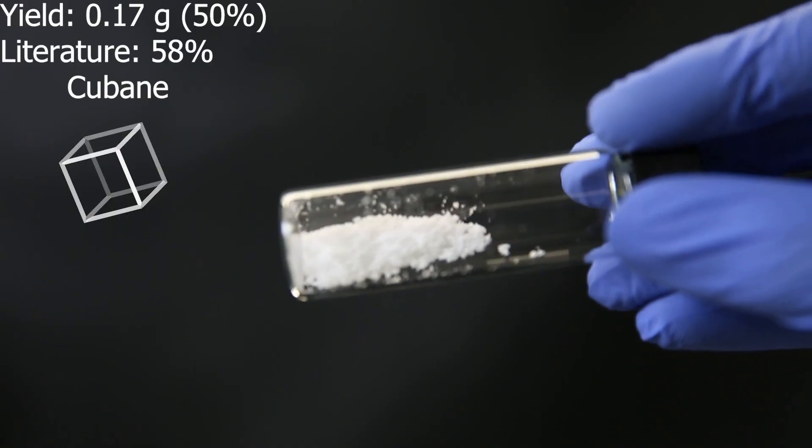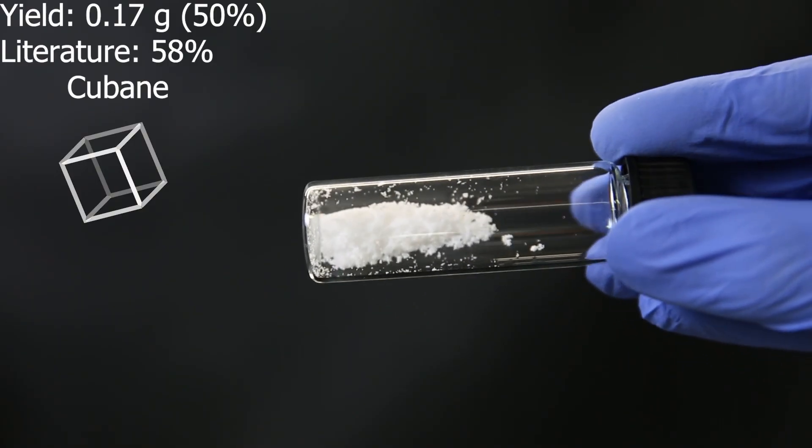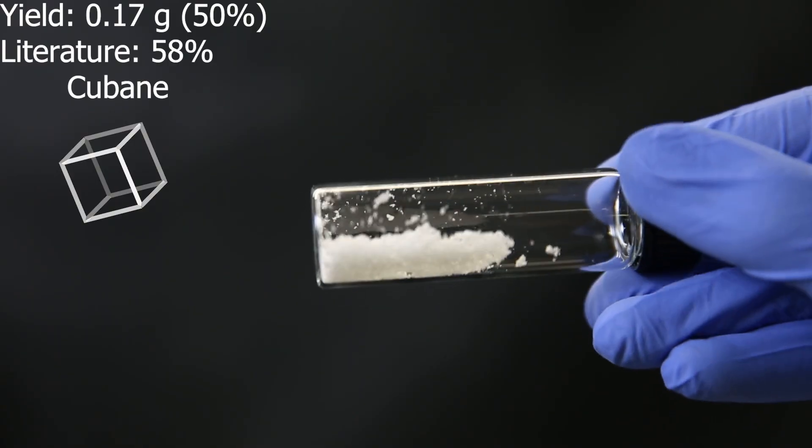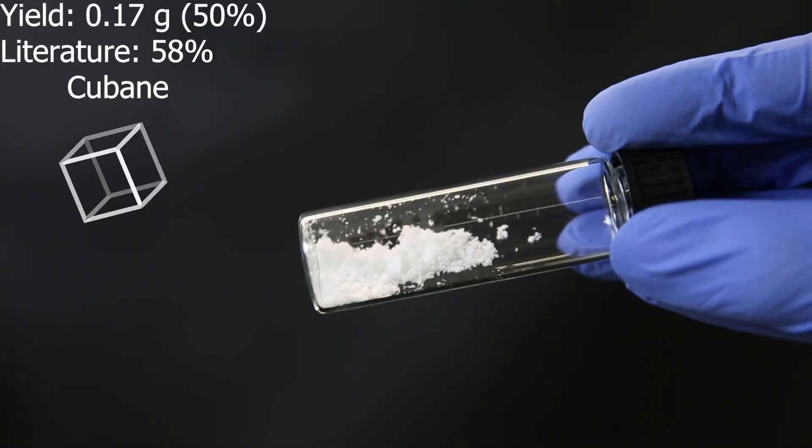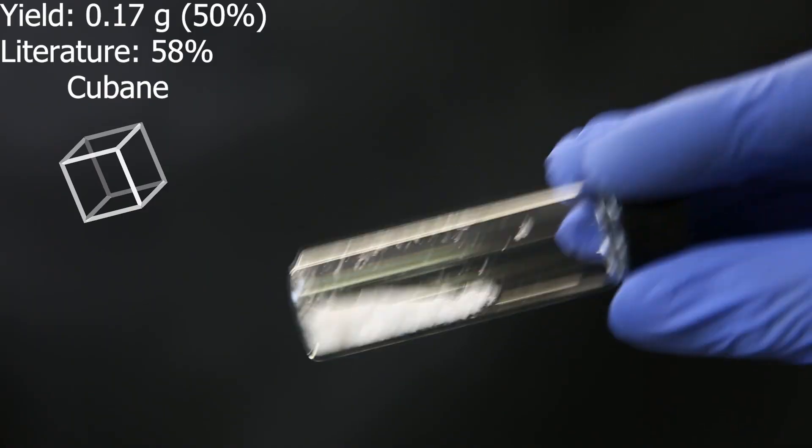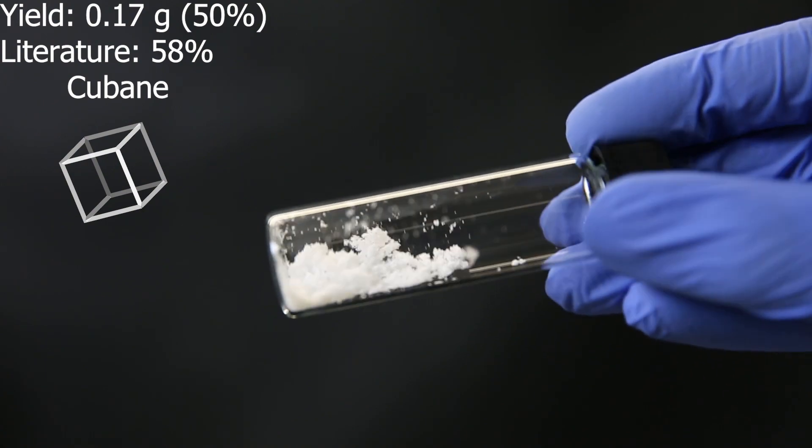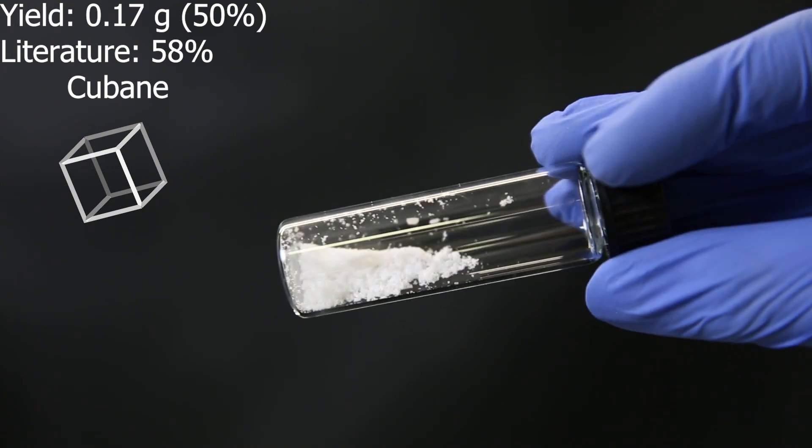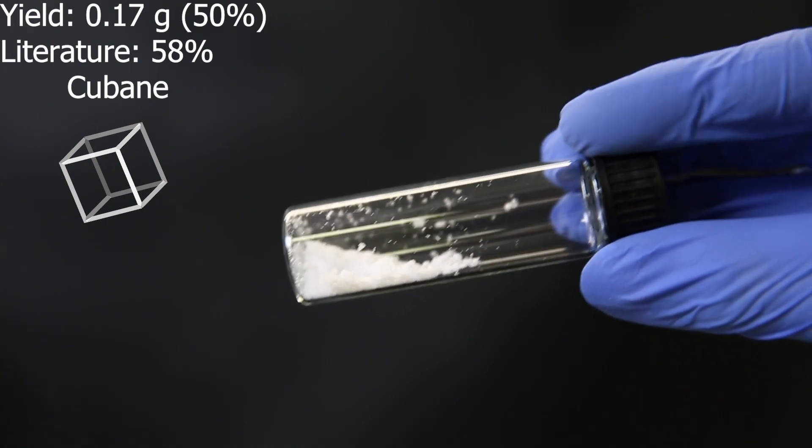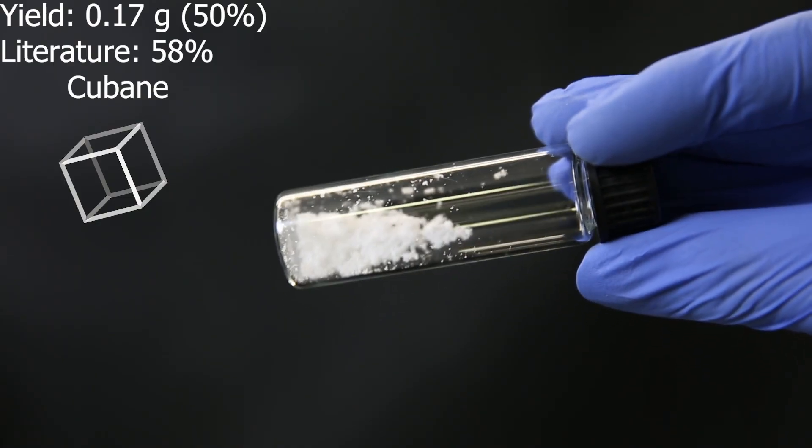The yield of cubane turned out to be 0.17 grams, which is 50%, assuming the conversion to the diacid had a yield of 99% like the literature. The cubane yield is a little bit lower than literature, but it still seems that the procedure is very reproducible considering what I got. I will also let this get tested with NMR soon, so when I have the results I will post about it.